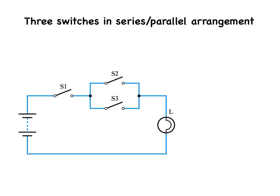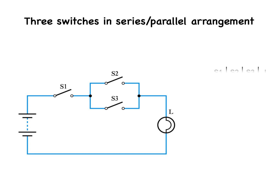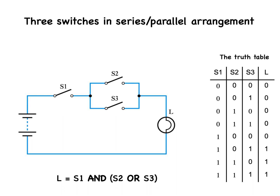Here is yet another binary arrangement with three switches, this time in a combo series-parallel arrangement, which generates the truth table. The logic of these three switches can be described by the equation: L equals S1 AND the value of S2 OR S3.